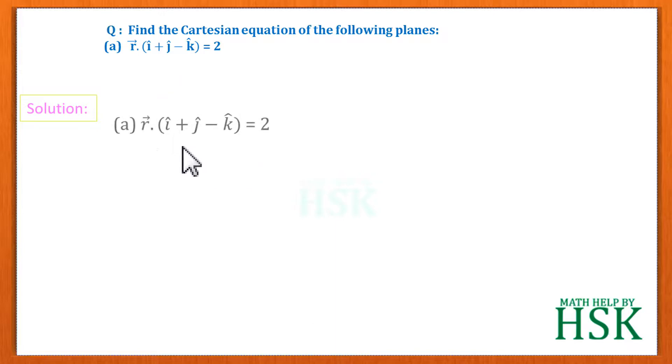Now in the first part we have been given the equation of the plane as r dot (i + j - k) = 2. So if we have to write this equation which is given in the vector form into the Cartesian form, what we do is we take r = xi + yj + zk, that is we write this vector r in terms of the position vector of any point having the coordinates x, y, z.